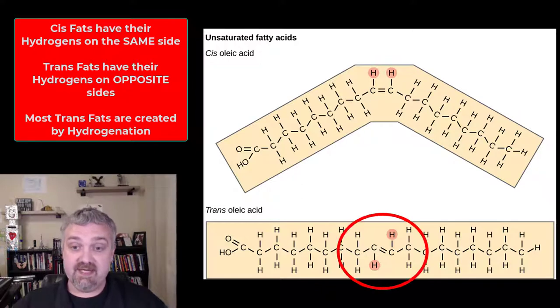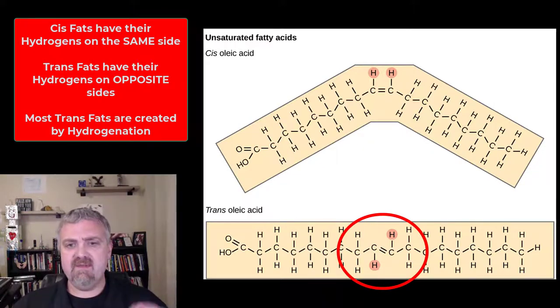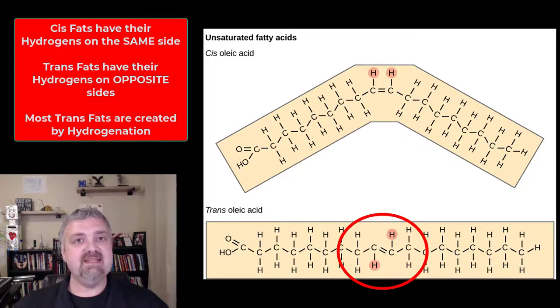Trans fats, I'm sure you've heard of trans fats. Trans fats are created when you take an unsaturated fatty acid from something like corn oil and you hydrogenate it. The hydrogenation process involves heat and heavy metals, and notice what happens when you turn a cis fat into a trans fat - it moves those hydrogens by hydrogenation and it straightens that tail.